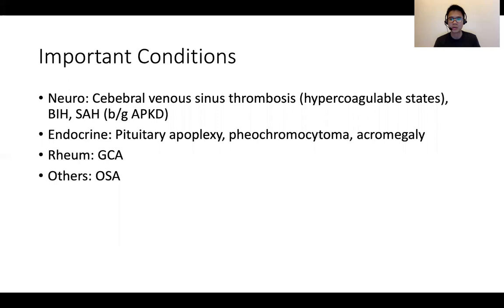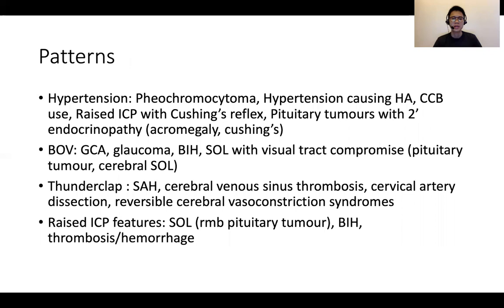For endocrine pathologies, pituitary apoplexy, pheochromocytoma, and acromegaly are conditions to consider. GCA is an important cause of headache in the appropriate epidemiological context and is an important differential. Obstructive sleep apnea is also a common cause of headache — for OSA, you may want to think of conditions such as hypothyroidism that could be a secondary cause.